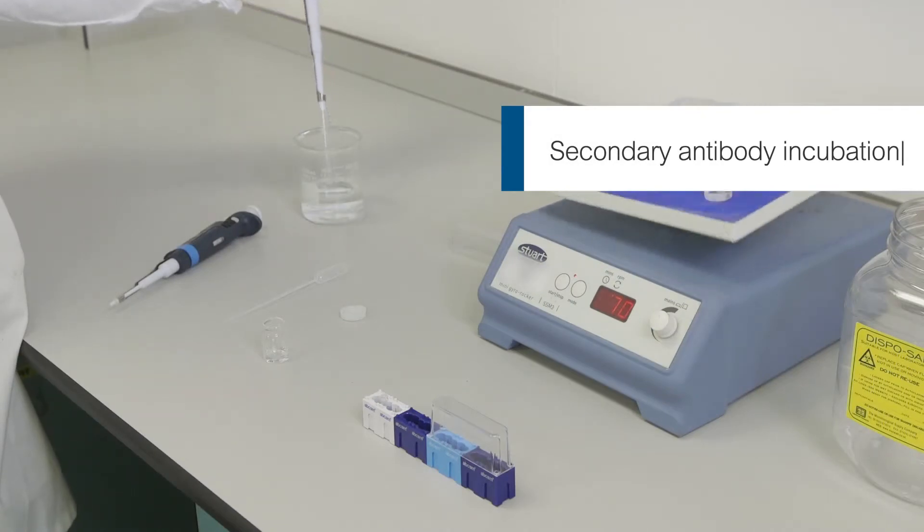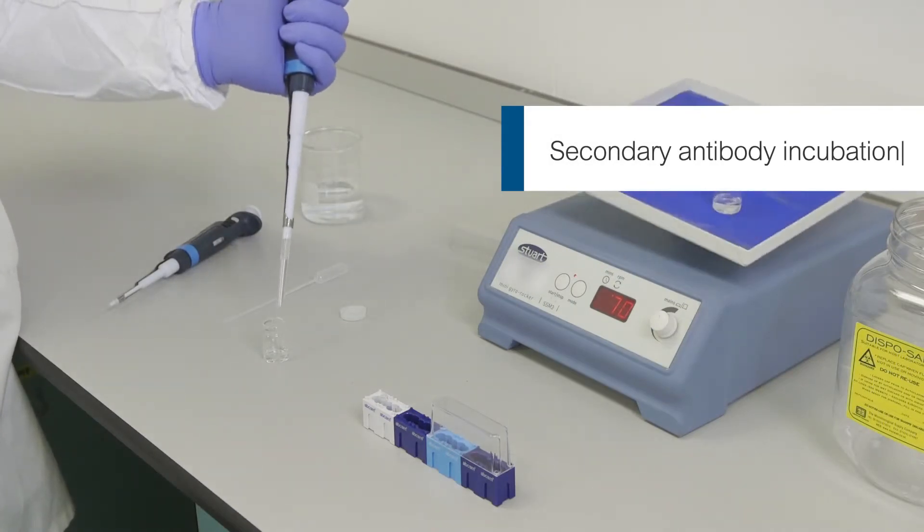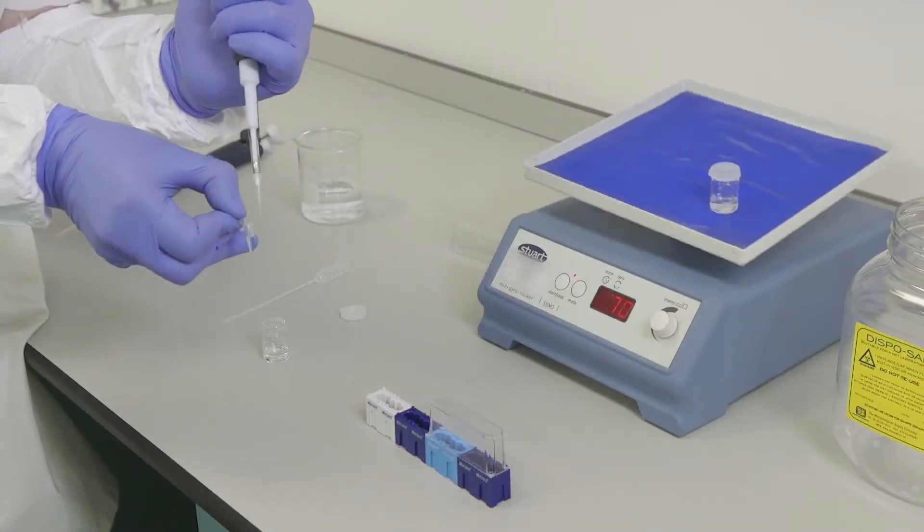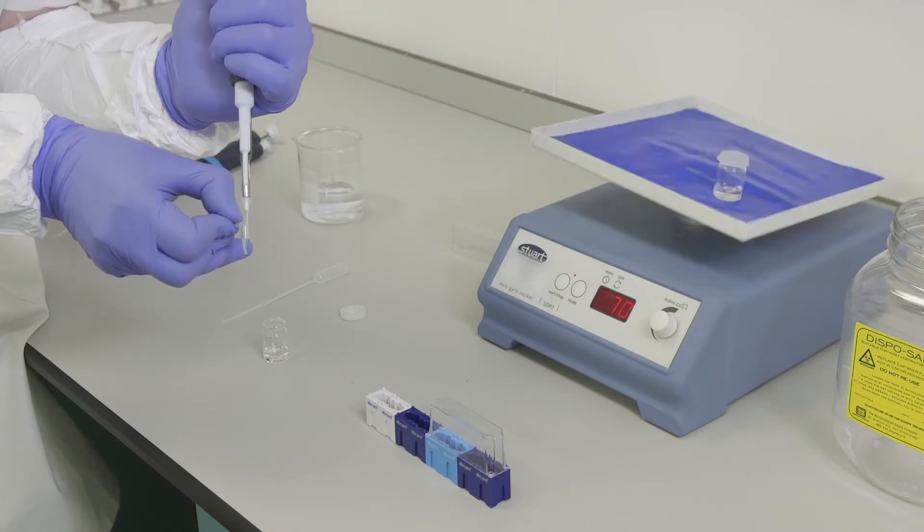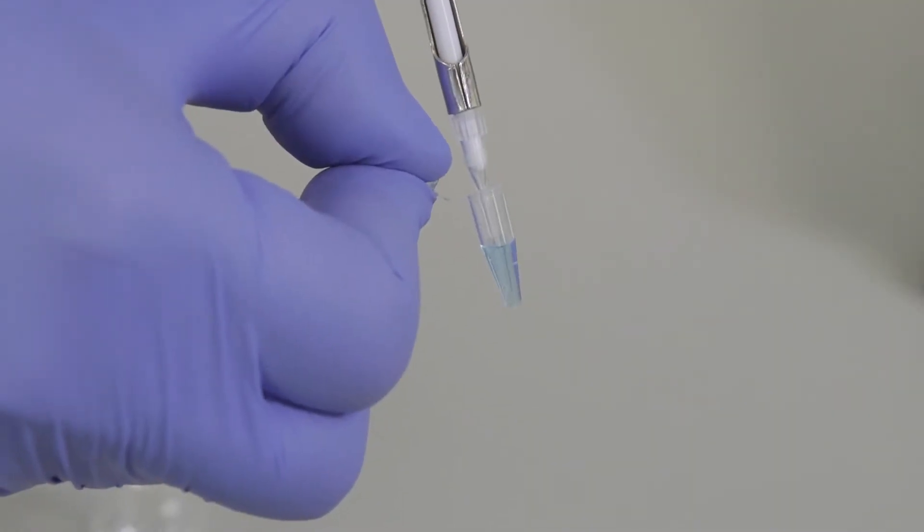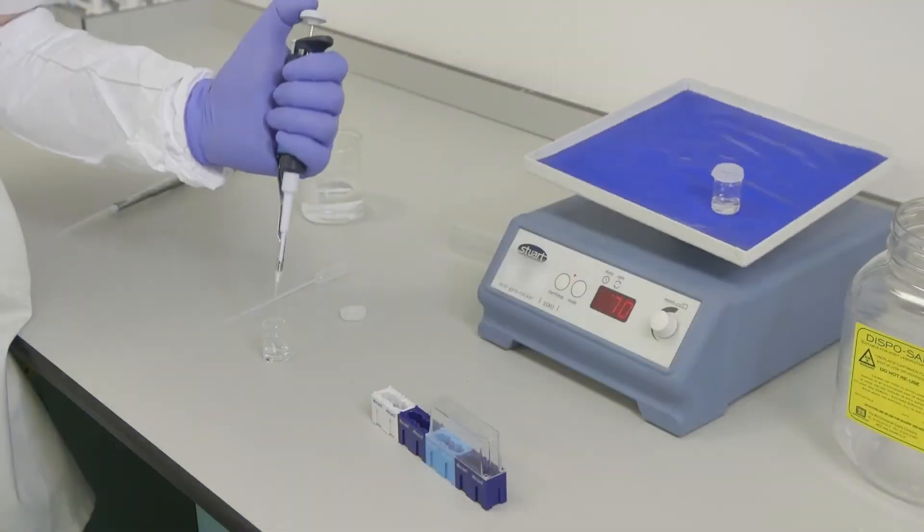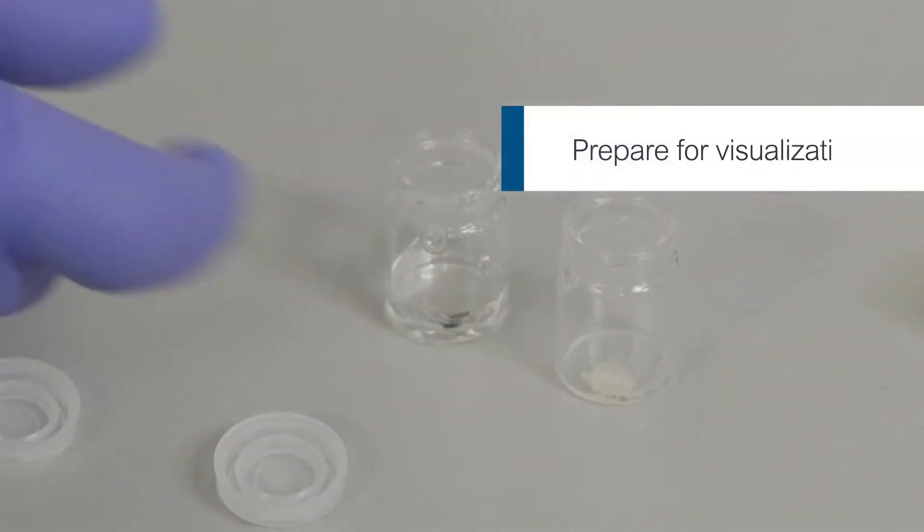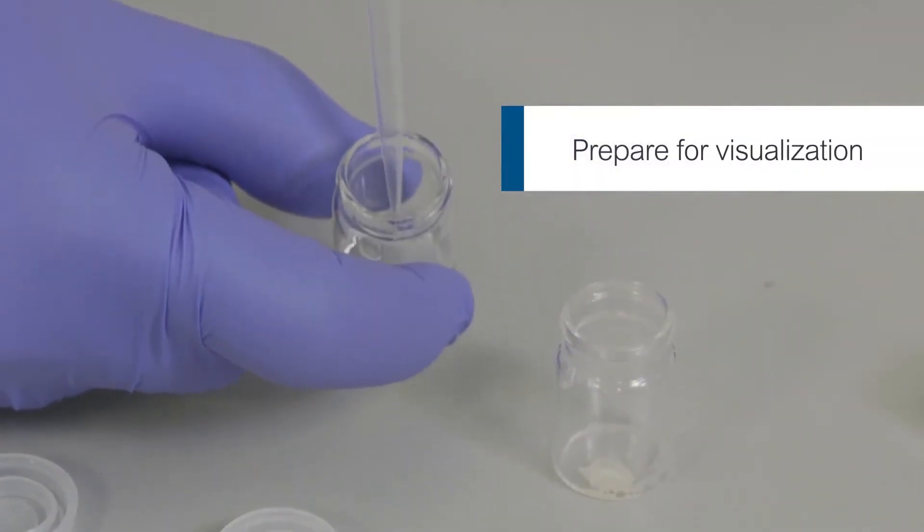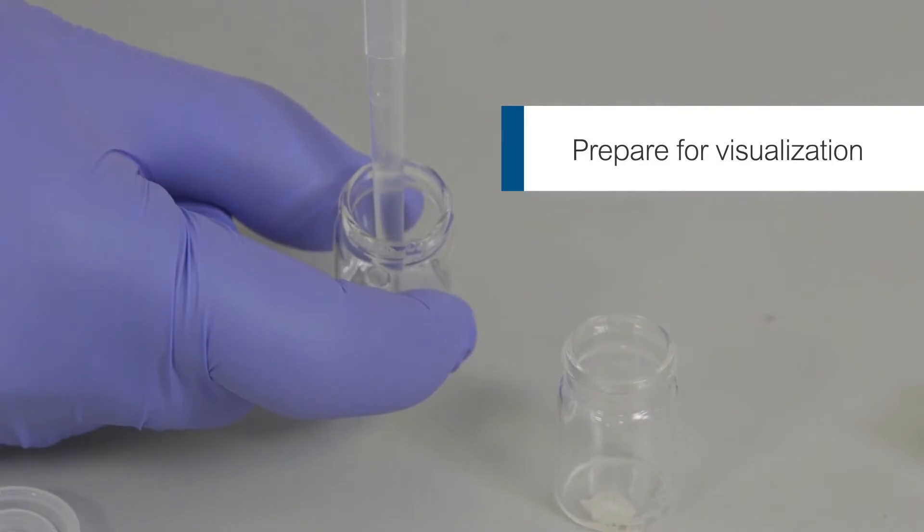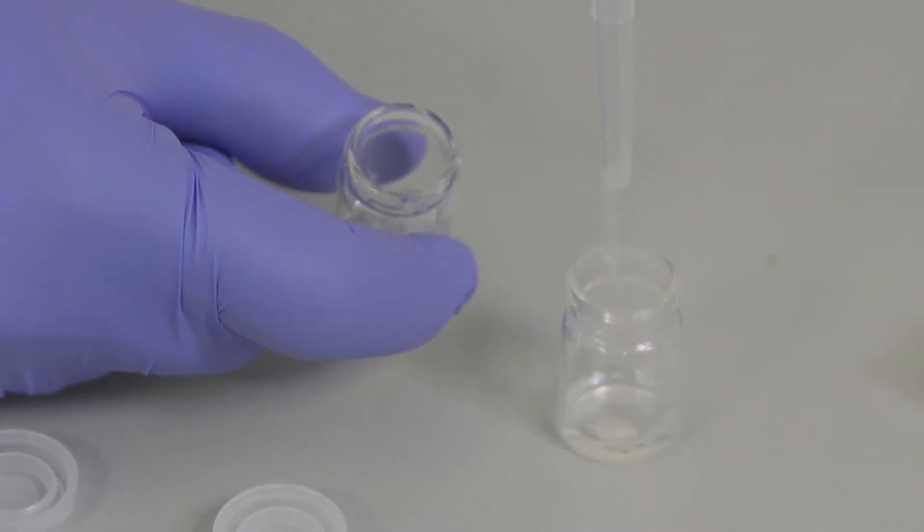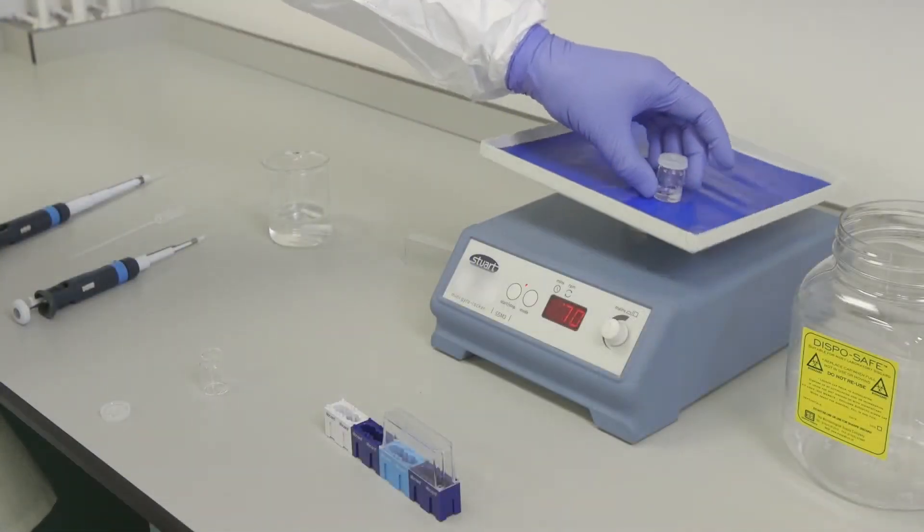Prepare the secondary antibody solution by diluting the secondary antibody in the Tris Triton solution to the correct dilution factor. A good starting point is the guideline provided by Abcam with the product, but it is recommended to optimize this for each antibody used. Here we are using a secondary that is conjugated with Alexa Fluor 647. Remove the wash solution and add the secondary antibody solution to the brain slice, leaving it to incubate at room temperature for 1 hour.